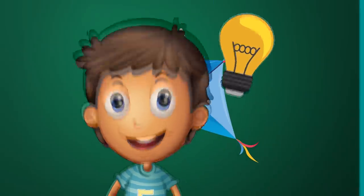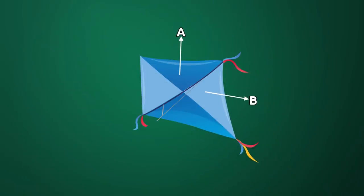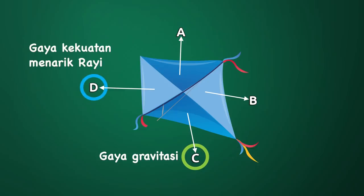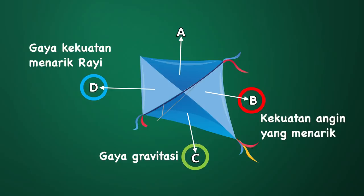Bagaimana Sobat XSense? Sudah tahu jawabannya? Mau tahu lebih jelasnya? Yuk simak penjelasan berikut. Gaya gravitasi pada layang-layang ditunjukkan oleh huruf C. Gaya kekuatan menarik dari Rai ditunjukkan oleh huruf D. Kekuatan menarik Rai harus diperbesar sehingga akan sebanding dengan gaya angin kencang yang menghadang layang-layang tersebut.